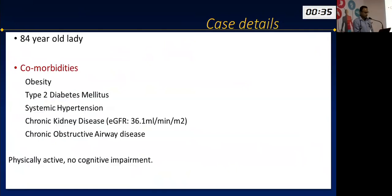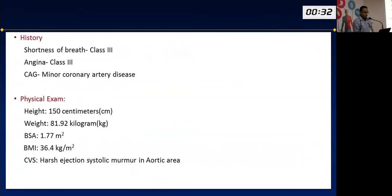Here is a typical TAVI case example: an 80-plus-year-old lady with multiple comorbidities presenting with Class 3 angina and dyspnea. Angiogram showed minor coronary artery disease. After assessment including vascular access vessel dimensions, we discussed the case with our heart team — including surgeons and anesthesia — and planned for TAVI. The final result shows the valve doing well with hardly any regurgitation.